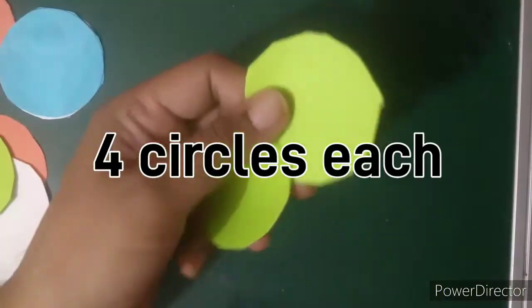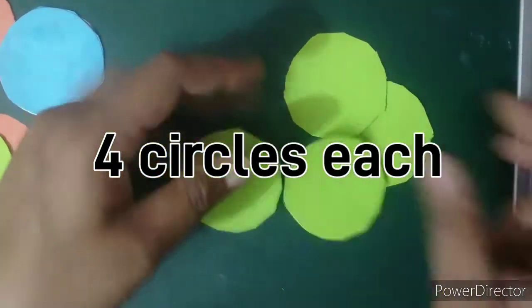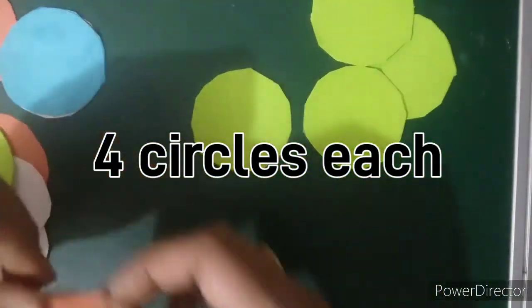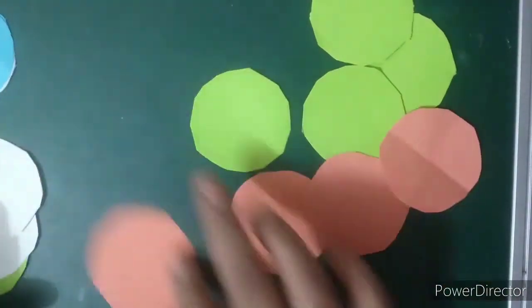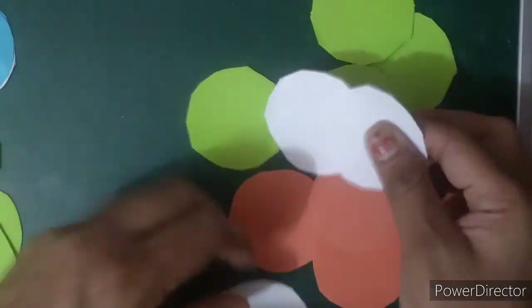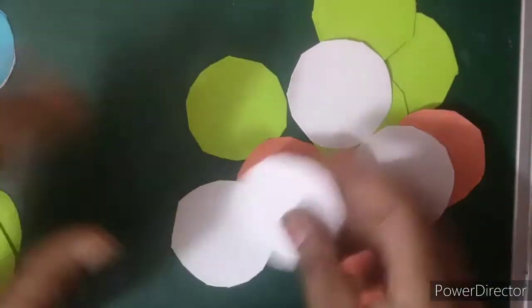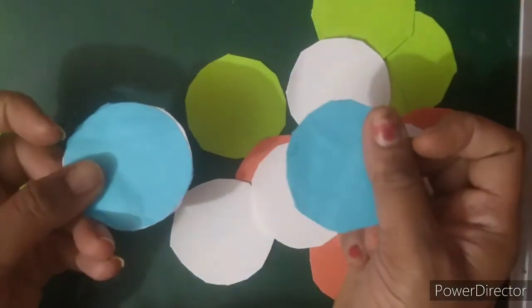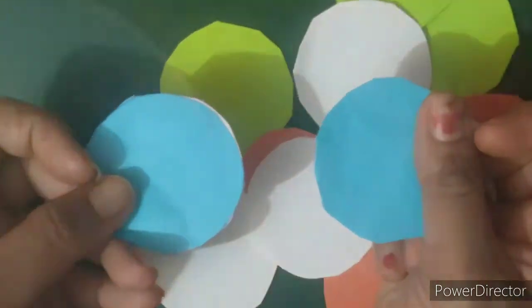So you will get 4 green sheets. Similarly I have cut all the orange sheet, 4 orange, then 4 white sheets and 2 blue sheets.